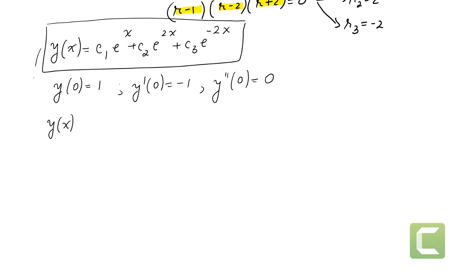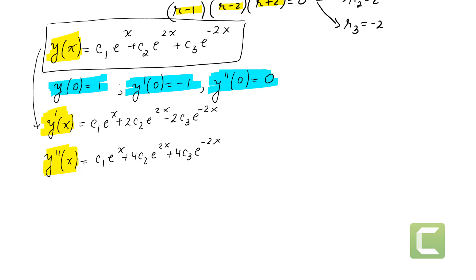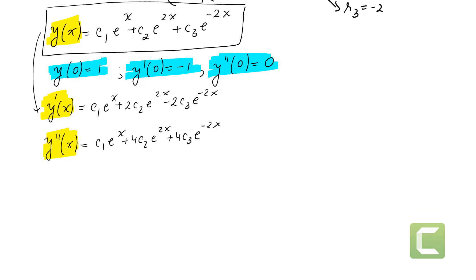y of x is given. So y′(x) equals c1·e^x plus 2c2·e^(2x) minus 2c3·e^(-2x). And y″(x) equals c1·e^x plus 4c2·e^(2x) plus 4c3·e^(-2x). Plugging in x = 0, since e^0 equals 1, y(0) equals c1 plus c2 plus c3, which equals 1.